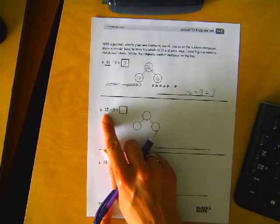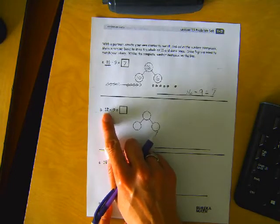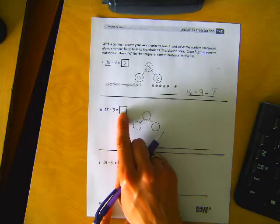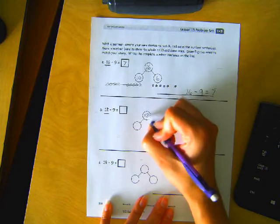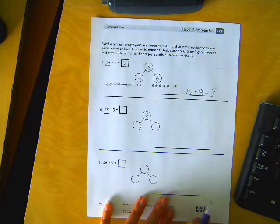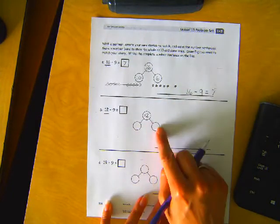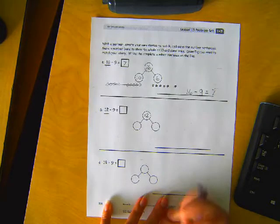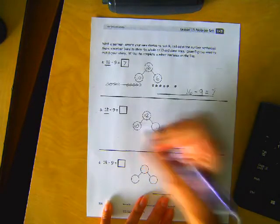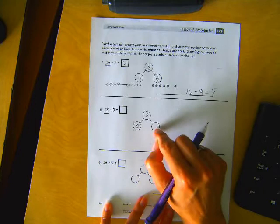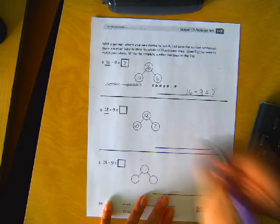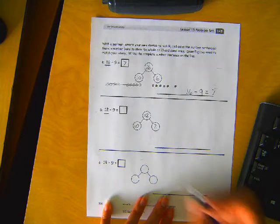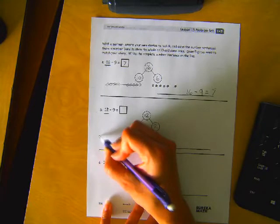Alright, let's make up another story with twelve minus nine equals blank. Remember, we want to break this twelve up into tens and some ones. So we want a ten. And then how many ones in twelve? Two more.